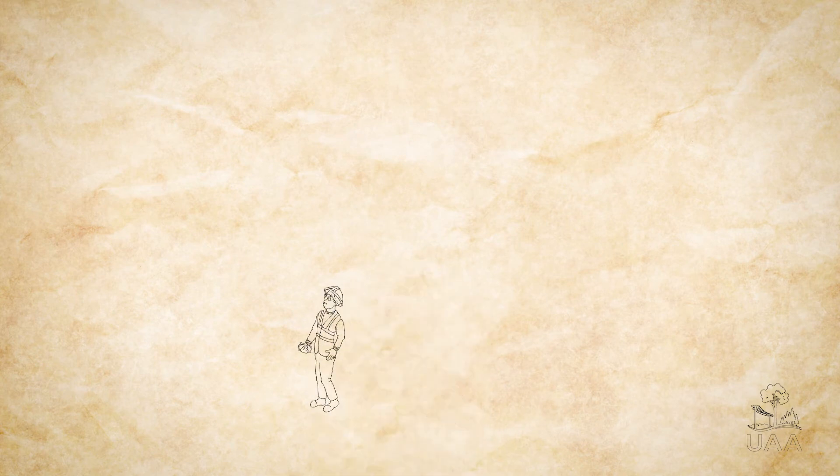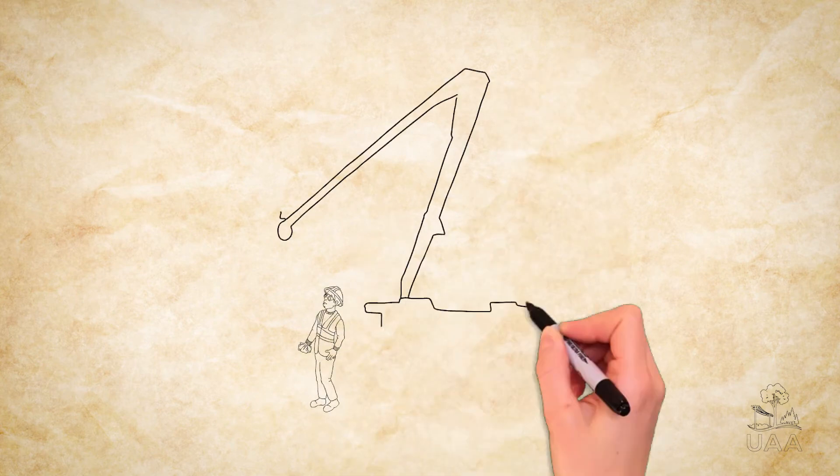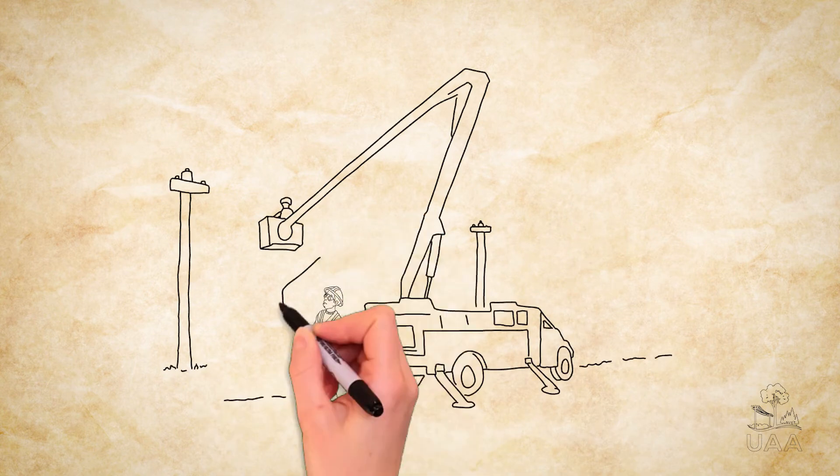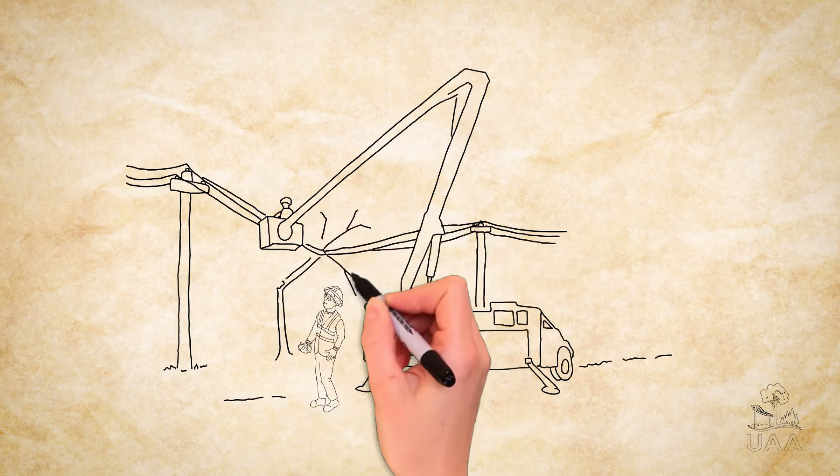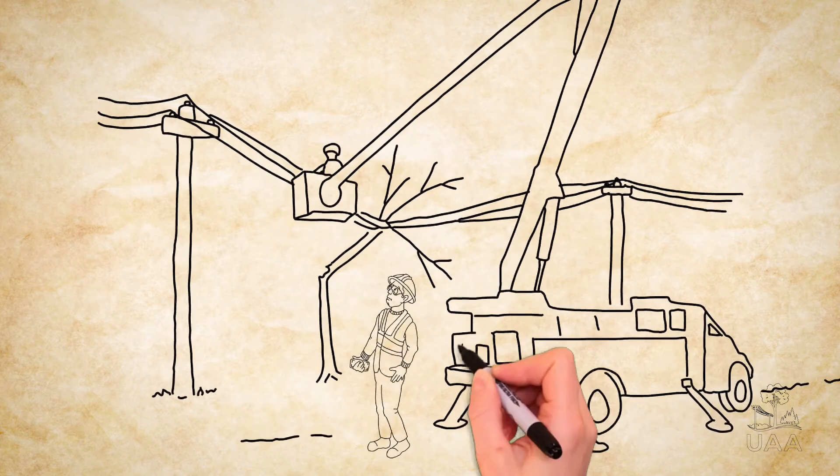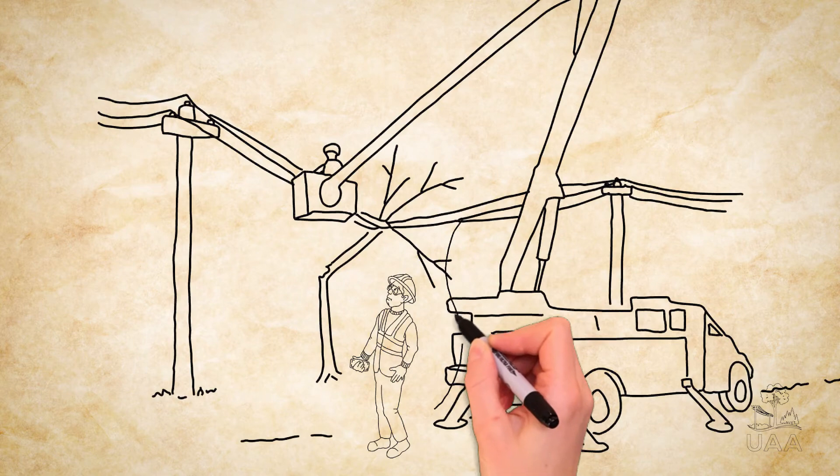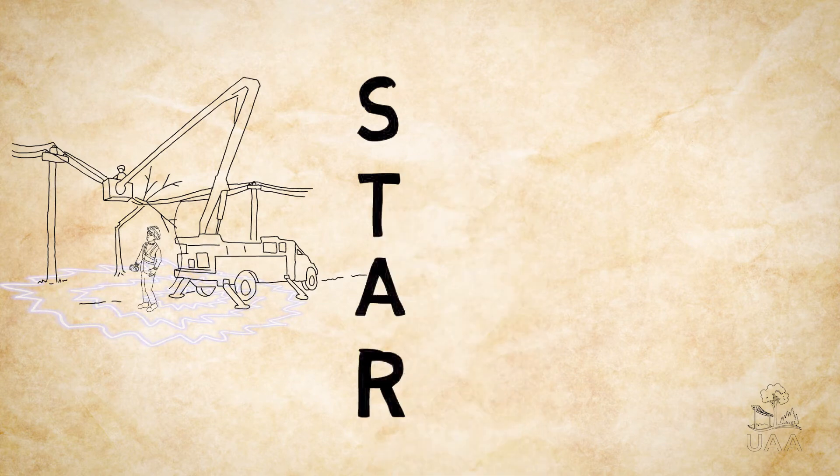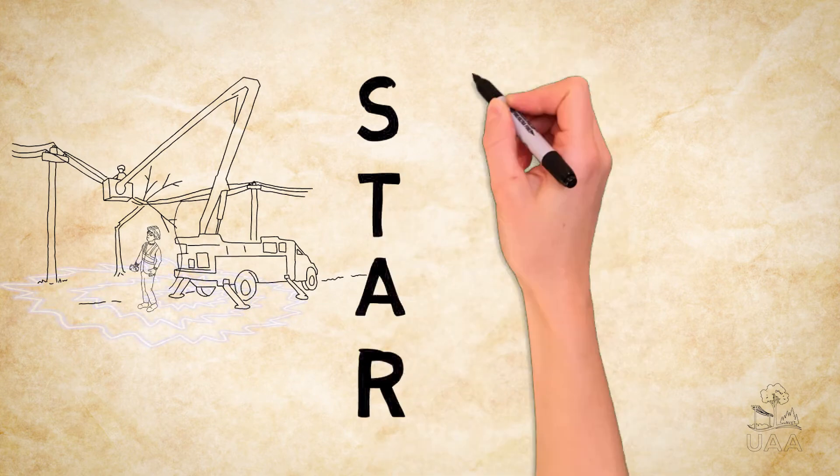Meanwhile, Alex is on the opposite side of town with his team of utility arborists assisting in restoring electricity. Together they are removing limbs and trees from verified grounded electrical circuits. Alex is standing near his bucket truck with its outriggers deployed when a strong wind suddenly knocks an ungrounded power line across the back of his vehicle. Just like Carmen, Alex follows the STAR process.